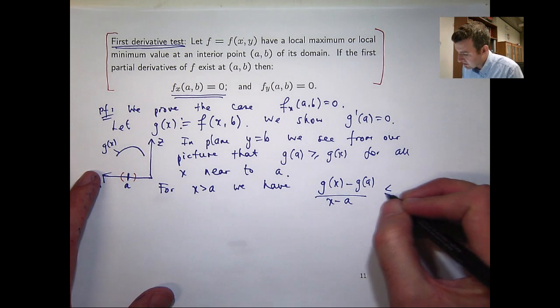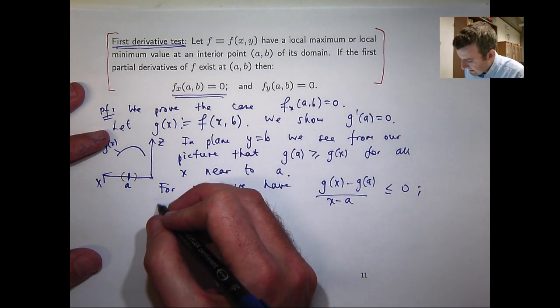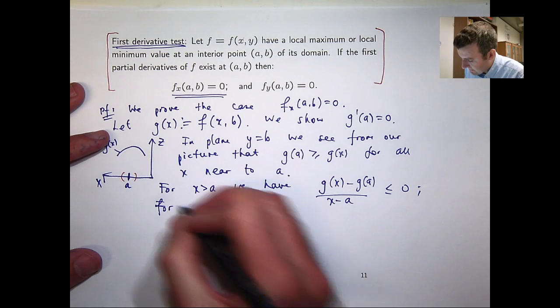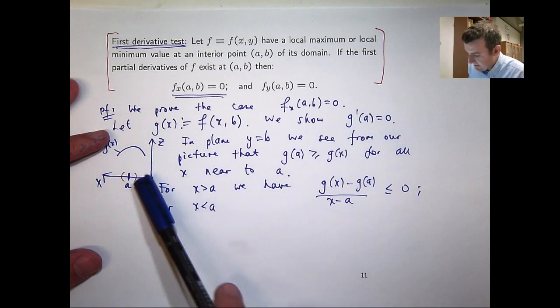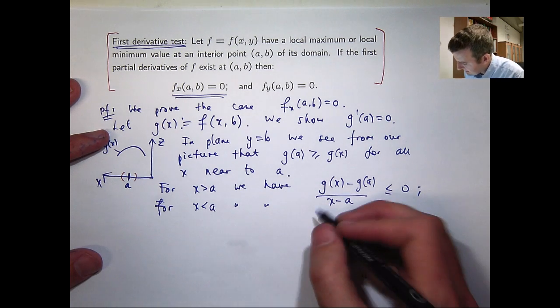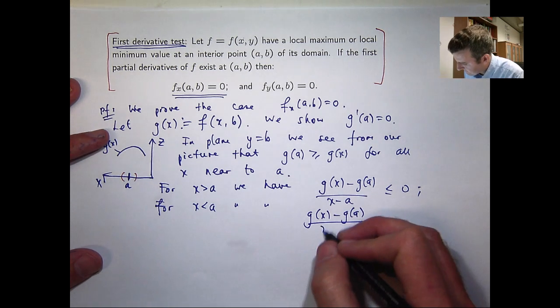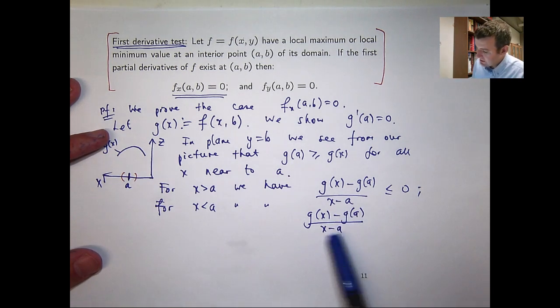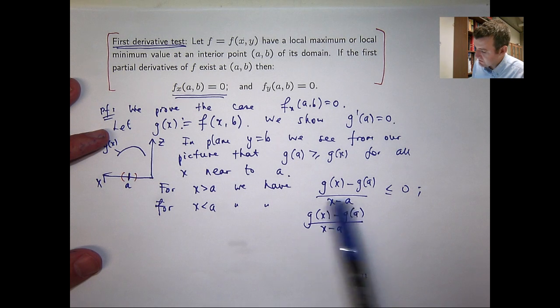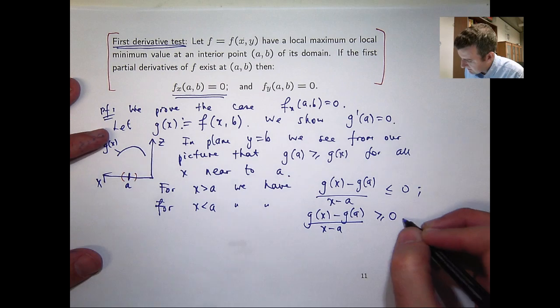And for x to the left of a, we have, well let's look at the same quotient again. So the bottom bit now is going to be negative and the top is going to be less than or equal to zero. So we're going to get the following.